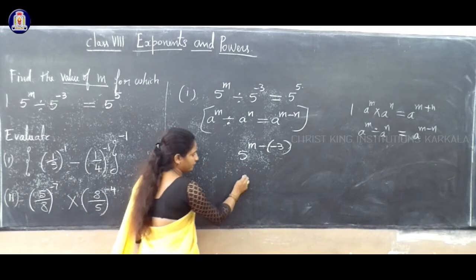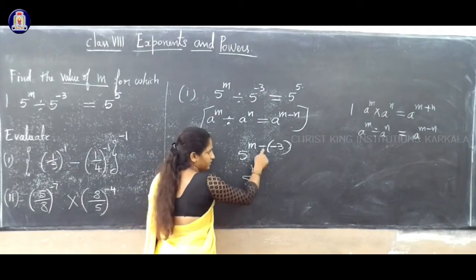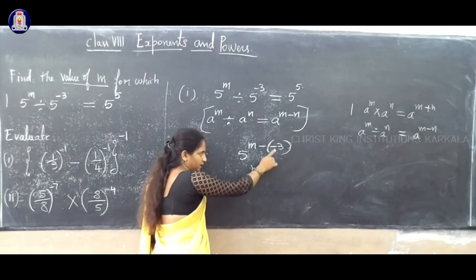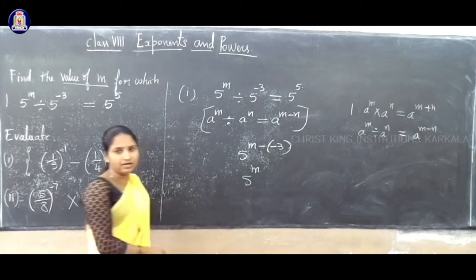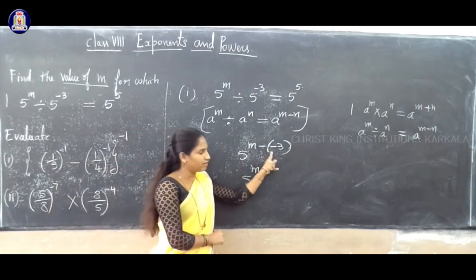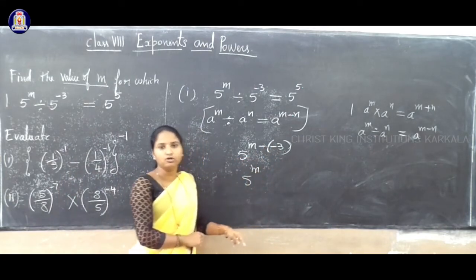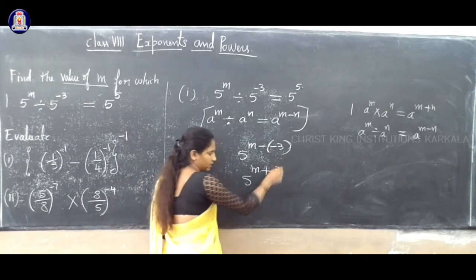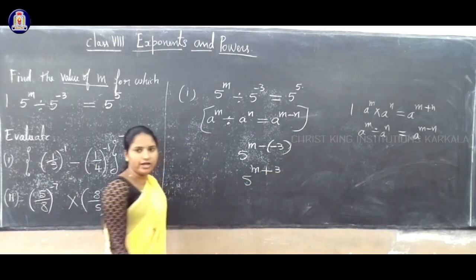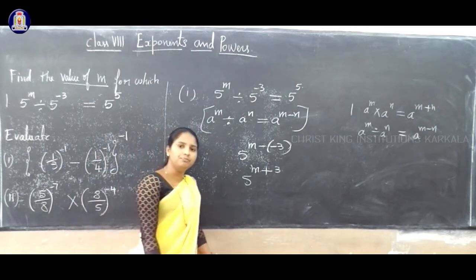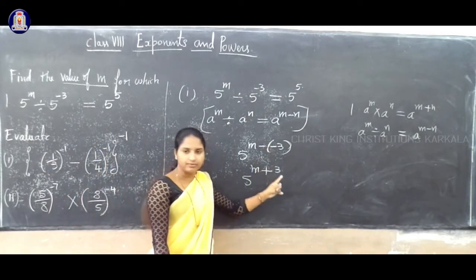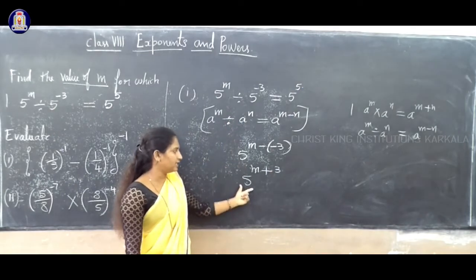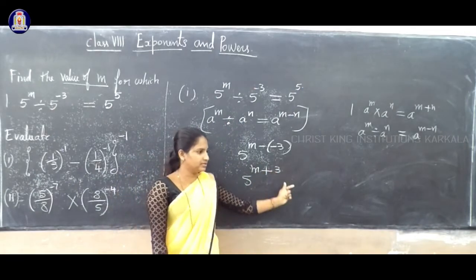Now simplify: 5 power n minus of minus 3. You have to remove the bracket in the next step. Multiply the signs: minus into minus. You know minus into minus is plus. So the value becomes 3. So we get 5 power n plus 3.